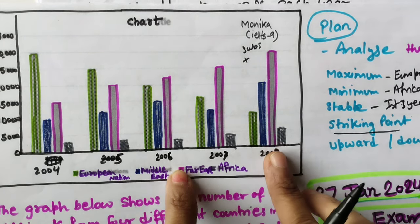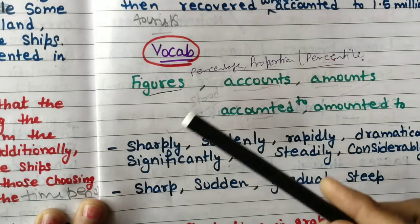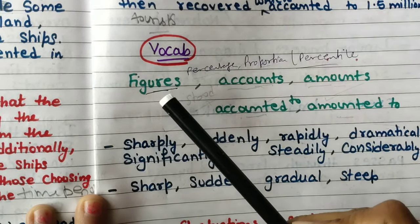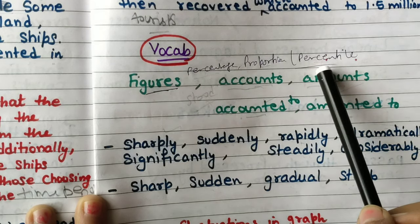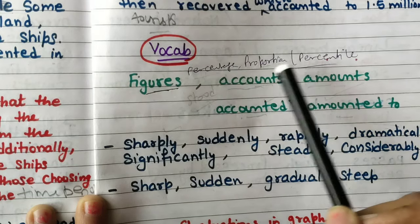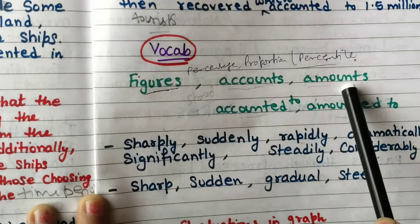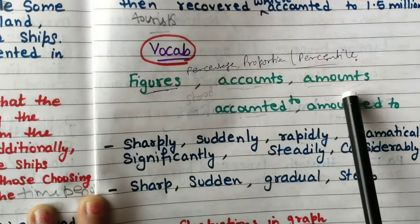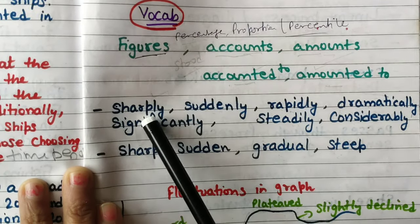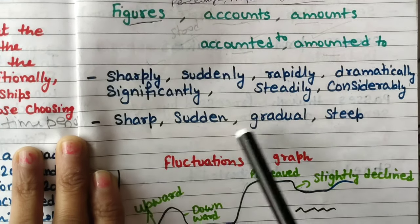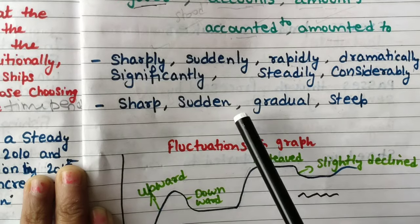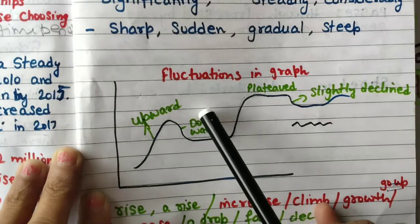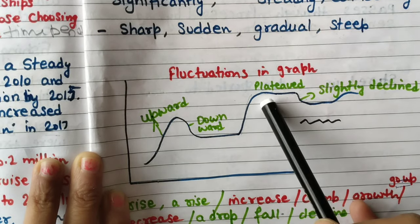Now some vocabulary. Whenever you are doing pie chart, table, line graph, or bar graph, please use these words: figures, percentage, proportion, percentile. If the figures are in percentage use those terms. If the graph is in past tense use: figured at, accounted to, amounted to. Also use adverbs like: sharply, suddenly, rapidly, dramatically, significantly, steadily, considerably. And adjective phrases: sharp increase, dramatic increase, sudden increase, gradual, steep.